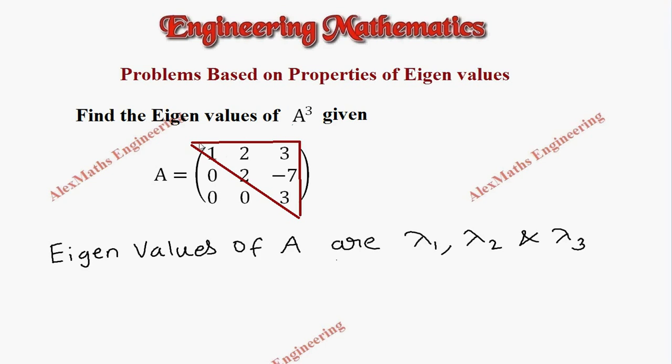In this case, the eigenvalues are the elements present in the leading diagonal as per the property. So now the values of lambda 1 is 1, lambda 2 is 2, and lambda 3 is 3.